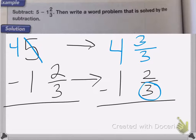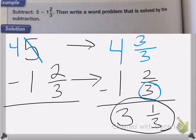Now we can subtract the two amounts. So 3 thirds minus 2 thirds is 1 third, and 4 minus 1 is 3. So my answer is 3 and 1 third.